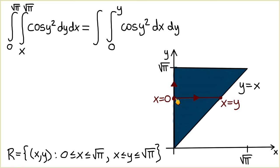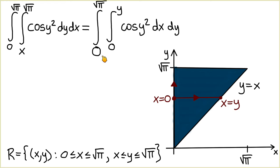Now recall that this line segment represents the base of a vertical cross section of the solid parallel to the x-axis, and these vertical cross sections extend from y = 0 up to y = √π. Therefore our outer bounds of integration are from 0 to √π.